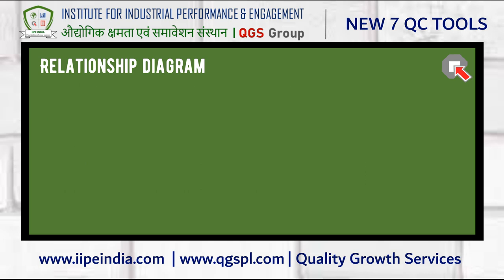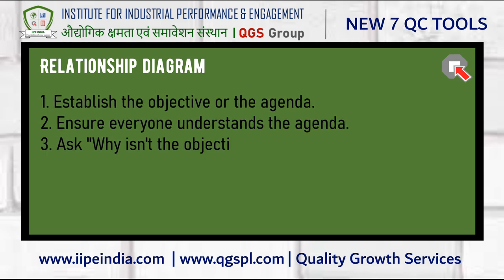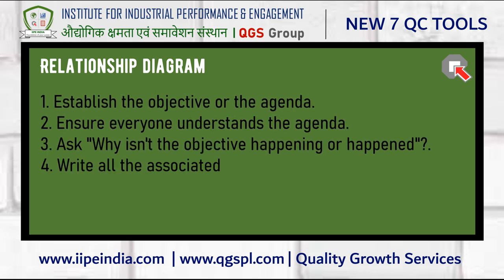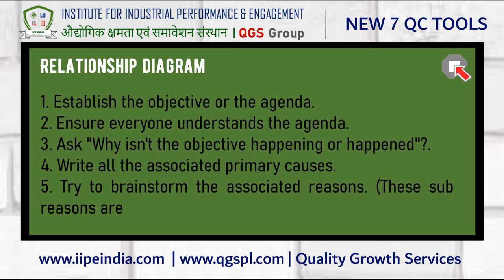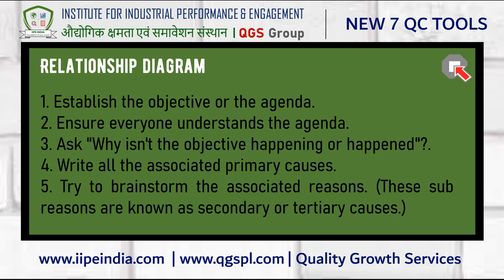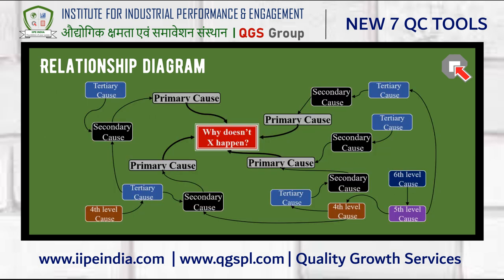Let us try to understand how to draw a relationship diagram. First, among the team, establish the objective or the agenda and ensure everyone understands it. Then specifically ask why the objective isn't happening or hasn't happened. Based on the knowledge, write all the associated primary causes. For all the primary causes, try to find out the associated reasons — these can be one or more, and are known as secondary or tertiary causes.